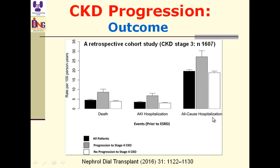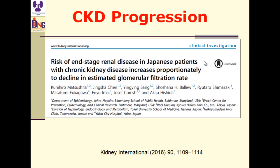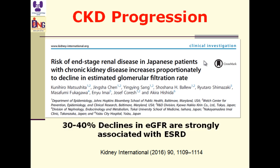This study on risk of end-stage renal disease in Japanese patients with CKD showed that a 30 to 40% decline in estimated GFR is strongly associated with end-stage kidney disease. The more the progression, the worse the outcome and the greater the risk of progressing toward end-stage renal disease.